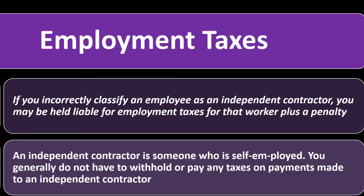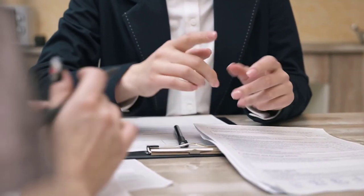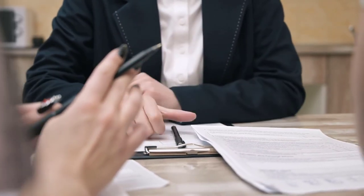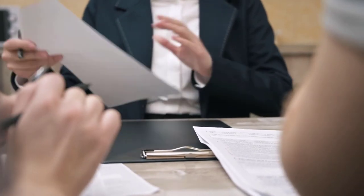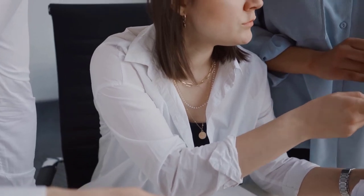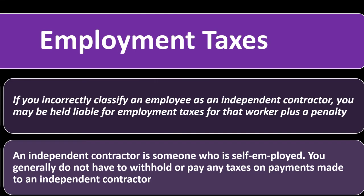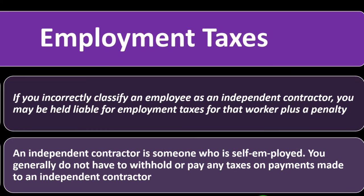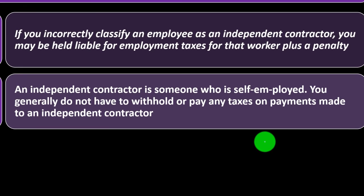The IRS has an incentive to classify workers as employees — they'd like them categorized as employees generally. So if you have someone as a contractor, be aware that if the IRS questions you, you should have legitimate arguments as to why you categorized them as a contractor. Look up Publication 15A, list those things out, and make sure you're structuring your organization in compliance so you don't get stuck in that issue. An independent contractor is someone who is self-employed — you generally do not have to withhold or pay taxes on payments made to an independent contractor.